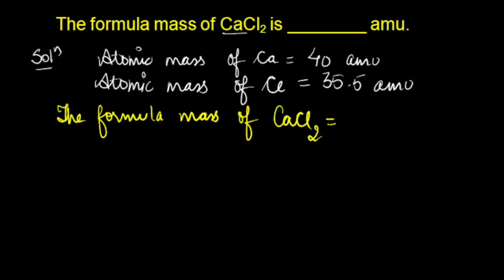it is equal to atomic mass of calcium. We should add on the masses. Atomic mass of calcium plus 2 times, because 2 atoms of chlorine are present. 2 times atomic mass of chlorine.